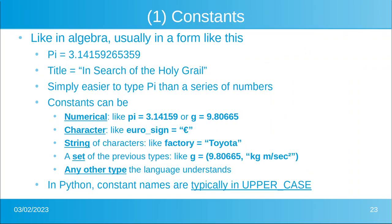Let's talk about constants. Like in algebra, you usually write it in a form like pi equals 3.14, or title equals 'In Search of the Holy Grail' — in quotations to indicate it's a string. It's simply easier to type pi than to type a whole bunch of numbers. Constants can be numerical, characters, strings, or a set — for example, the gravitational constant G is 9.80665 kilograms meters per second squared. A constant could be any type that the language understands. Typically in Python, we write constants in uppercase, separated by underscores, so that we know it's a constant.